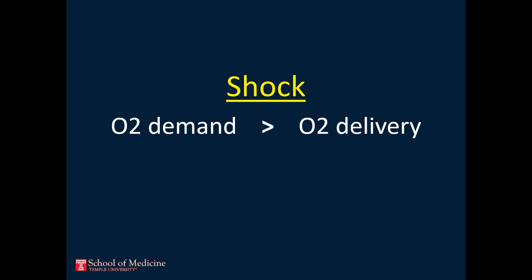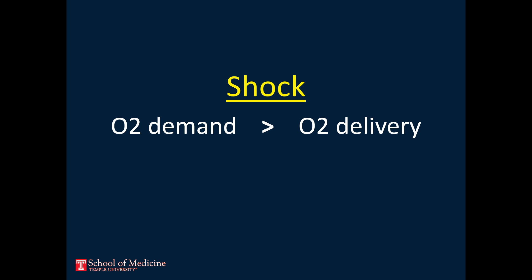Shock is a state in which oxygen demand of tissues exceeds oxygen delivery to tissues. This is a state of tissue hypoperfusion. There are several key concepts in physiology that are essential to understanding shock. These include cardiac output, which is heart rate times stroke volume; systemic vascular resistance, which is largely determined by the degree of vasoconstriction or vasodilation of the body's blood vessels; and inotropy, or the contractility of the heart.